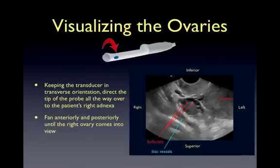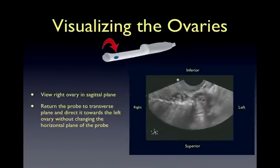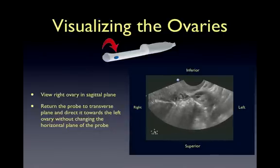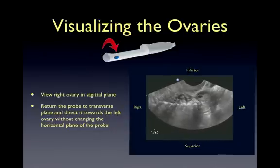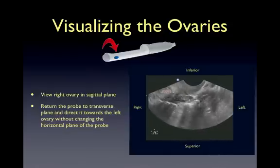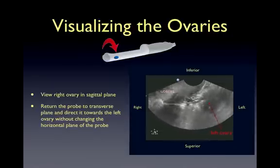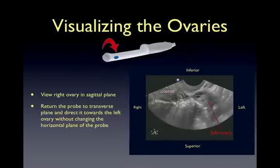The ovaries are medial to the iliac vessels. Take a look at the right ovary in sagittal view, then return the probe back to a transverse position and, without changing the plane of the probe, direct the tip towards the left adnexa. The left ovary is usually found at the same level as the right. Once the tip is in the left adnexa, if you do not see the left ovary, fan the probe anteriorly and posteriorly until it comes into view. Make sure you see the left ovary in a sagittal plane as well.